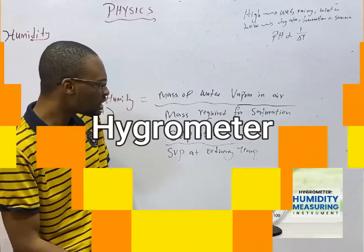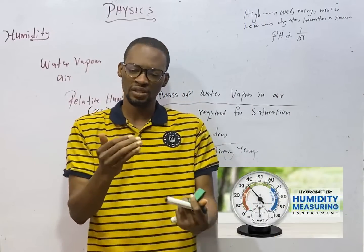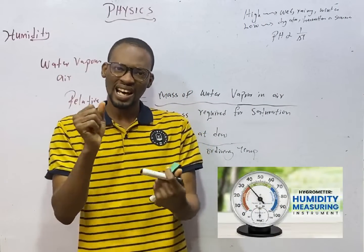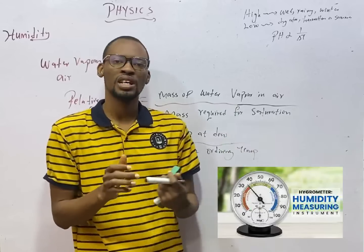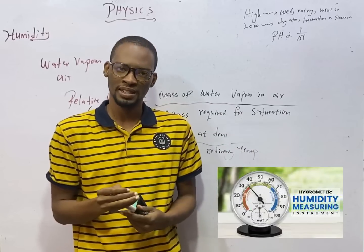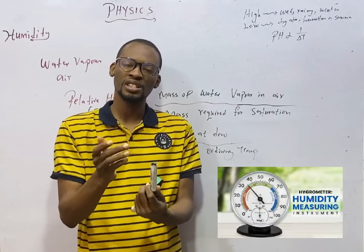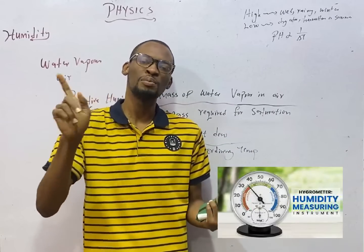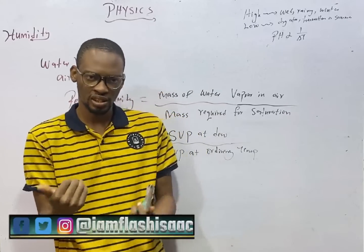To measure relative humidity, you need to have a hygrometer and two thermometers side by side. And relative humidity is inversely proportional to change in temperature.